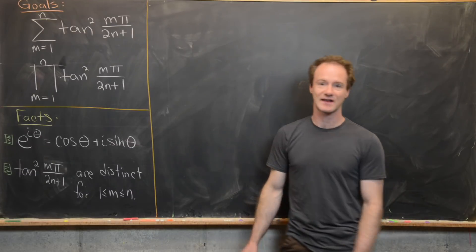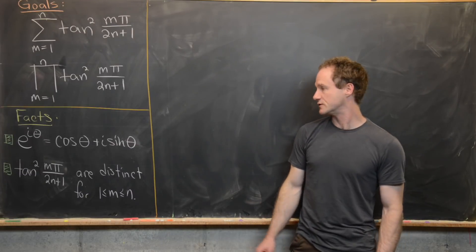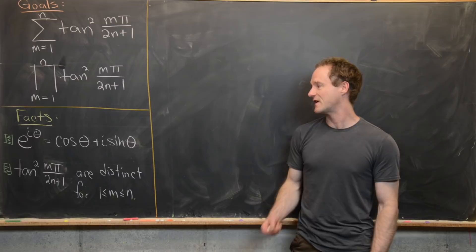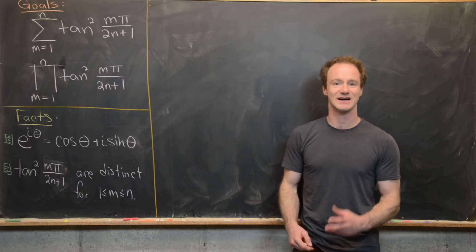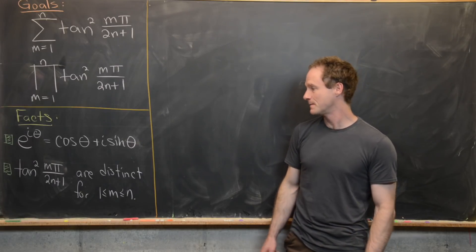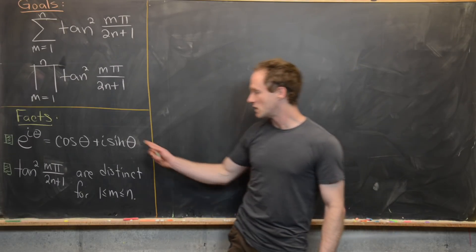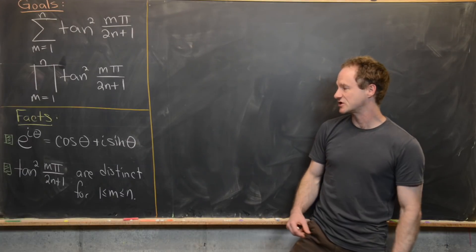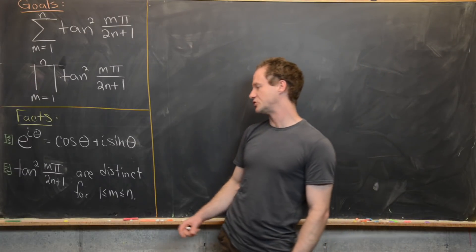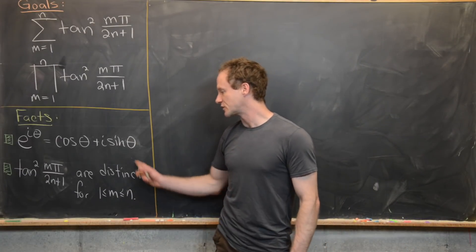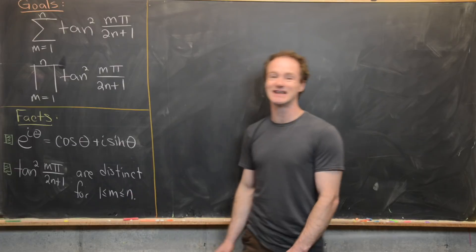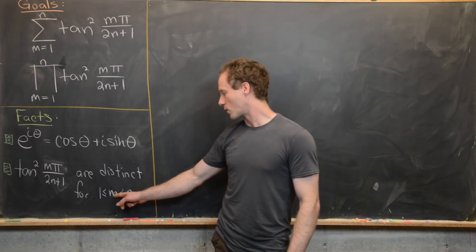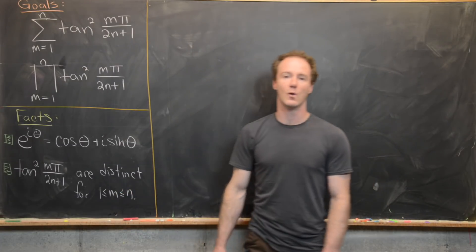The first fact we're going to make use of is Euler's formula: e to the i theta equals cosine theta plus i sine theta. We'll also use the trigonometric fact that tangent squared of m pi over 2n plus 1 are all distinct — that is, all non-equal — for m going from 1 to n.